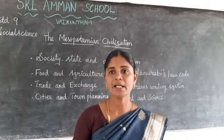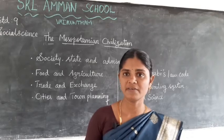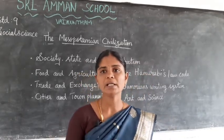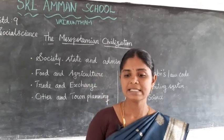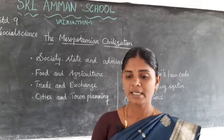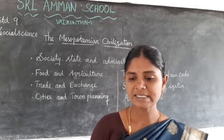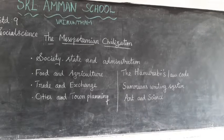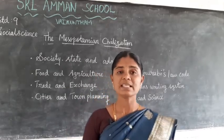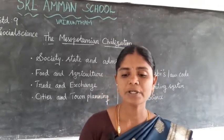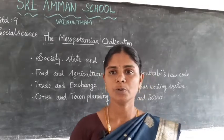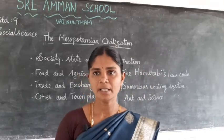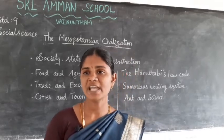The Sumerian calendar had seven days in a week. They created a water clock and a lunar calendar based on the movement of the moon. The Mesopotamians excelled in science, mathematics, astronomy, and medicine. They also developed advanced weights and measurements.